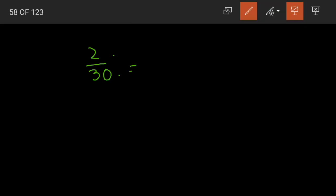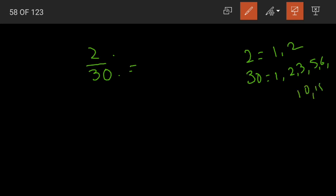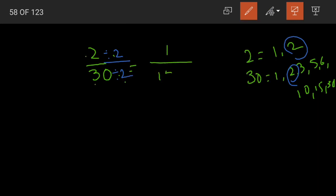If we reduce 2/30 to simplest form, we look at the highest common factor. The factors of 2 are 1 and 2. The factors of 30 are 1, 2, 3, 5, 6, 10, 15, and 30. The highest common factor is 2. So we divide both numerator and denominator by 2: 2÷2 is 1, and 30÷2 is 15. So 1/15 is our answer.